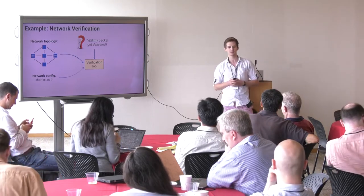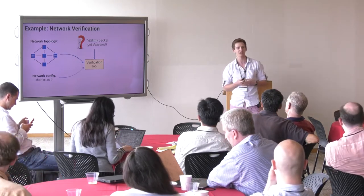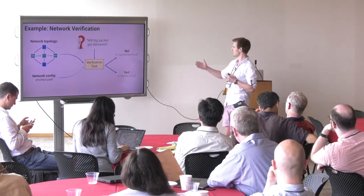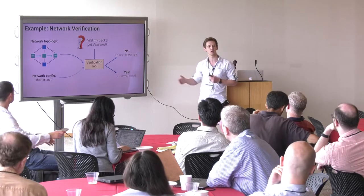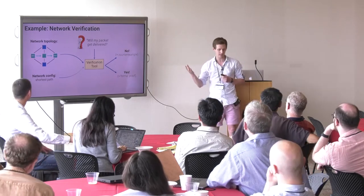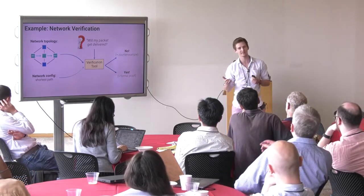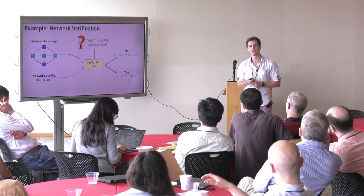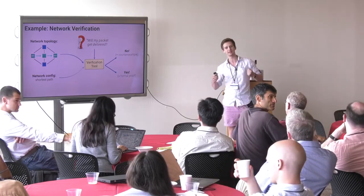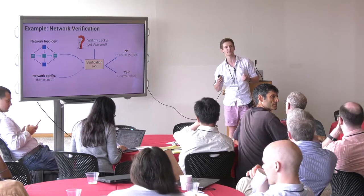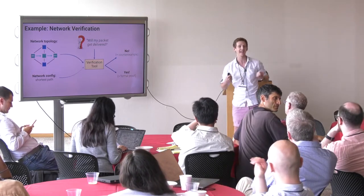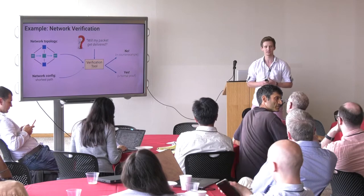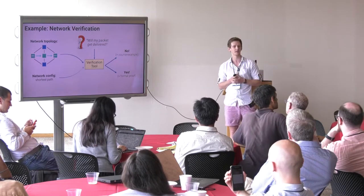The verification tool will analyze the configuration, build some mathematical model of it, and come back with an answer. It will either say there seems to be something wrong here and give you a counterexample — then you can go back and fix your configuration and iterate. Or it will say yes, and implicitly it will have constructed a formal proof that this configuration can't go wrong. We can then be very confident that it is correct and install it on a real network.